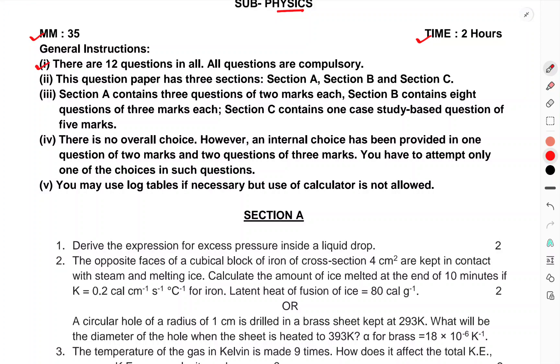There are 12 questions in all. All questions are compulsory. This question paper has three sections: A, B, and C. Section A contains two marks each, B contains eight questions of three marks each, C contains one case study based question of five marks.